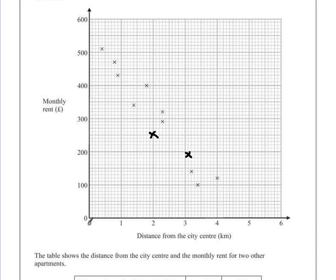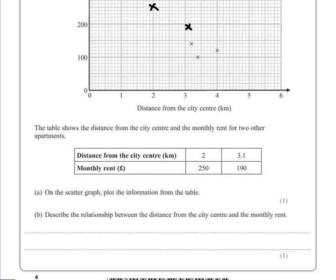So if we look at the distance from the city center, the further away we get, so the bigger this distance becomes, the lower the rent is. So the further we go, the smaller the rent becomes. And that is the relationship between the distance and the rent.